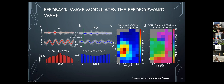They compute a modulation index — how entrained the fast oscillation is by the slow oscillation — and compare it to many shuffled versions of the data. If the phase distribution is non-uniform and passes statistical muster, the electrode is colored by the strength of coupling; otherwise it's colored gray. Most of the brain shows coupled oscillations. The phase of this coupling — i.e., at what phase of the slow wave the fast wave occurs — varies systematically across the brain.